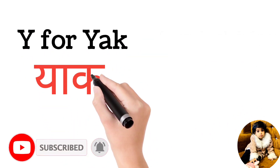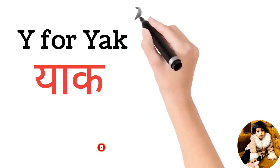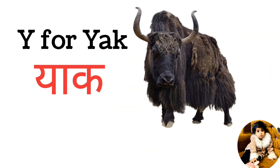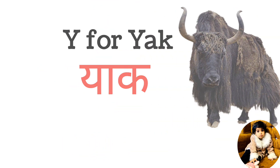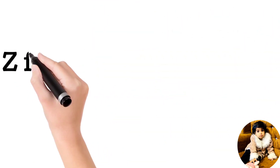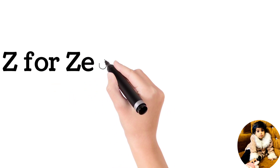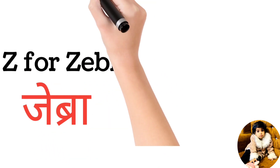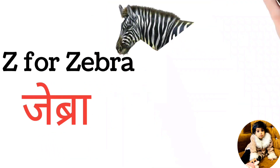Y for yark, yark means yark. Z for zebra, zebra means zebra.